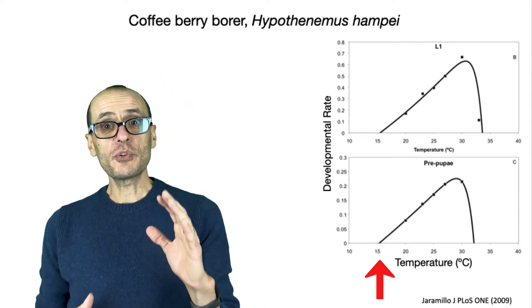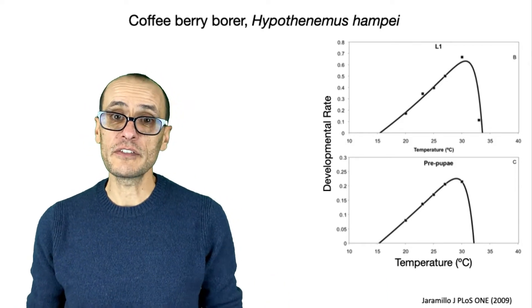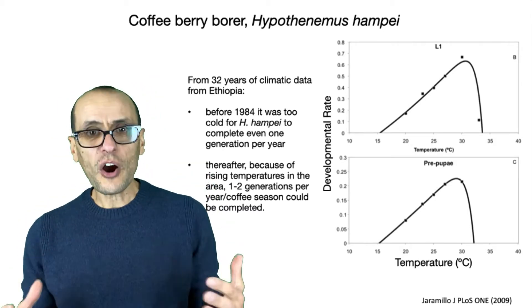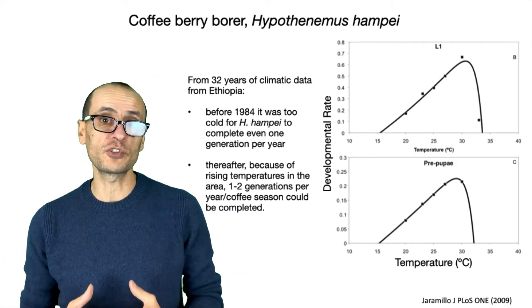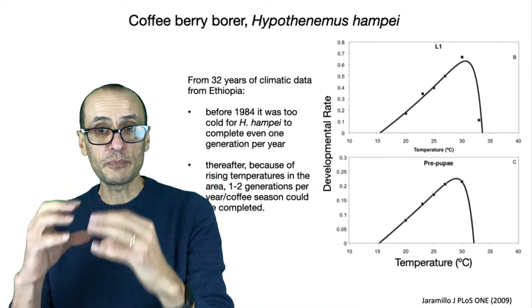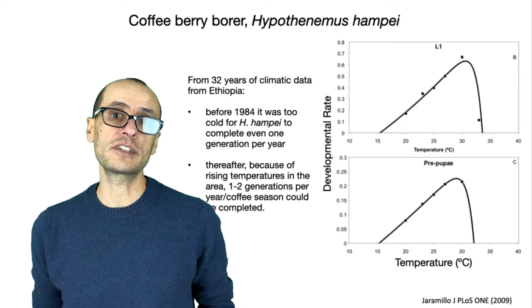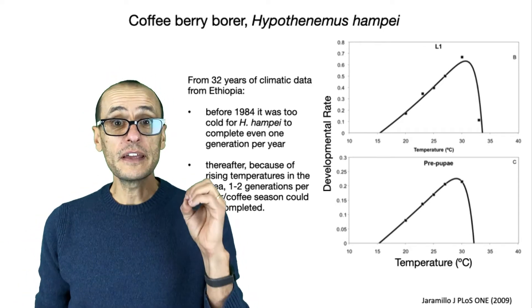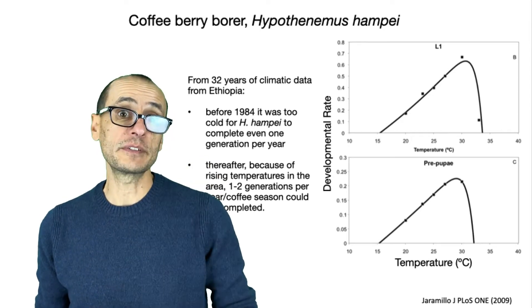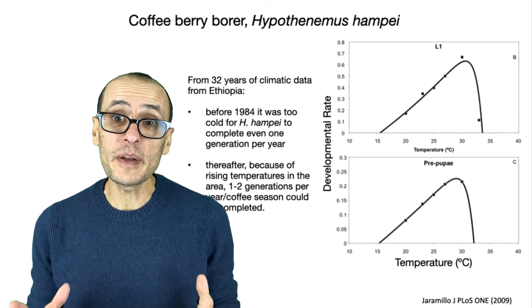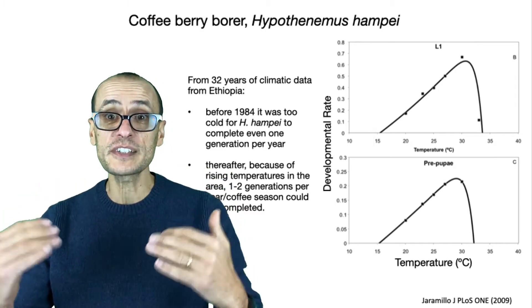And what researchers who have been studying this particular insect in Ethiopia found was that prior to 1984, it was actually hard for the insect to go through one full generation, from egg through to the larval stage, to pupation, and back to the adult stage. After 1984, these beetles were easily able to get one generation in. And actually, when the adults emerged, it was still warm enough for them to mate and have a full second generation.